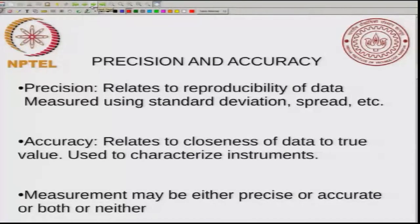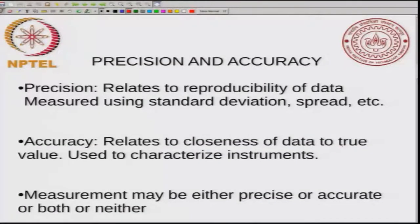The first two terms I want to define are precision and accuracy. Precision relates to reproducibility of data. Your data is said to be precise if all the measurements give you approximately the same value. It says nothing about the accuracy. Accuracy, on the other hand, is related to the closeness of the data to the true value. You might have a measurement that is very precise but not accurate.